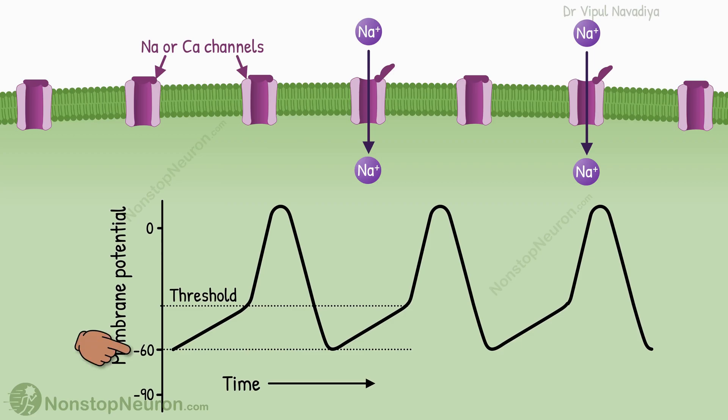In such cells, the resting membrane potential is on the higher side, and sodium and calcium ions keep diffusing into the cell, even in resting conditions. This is the main mechanism behind the self-excitability of the cell.